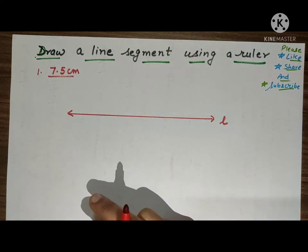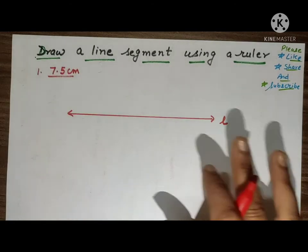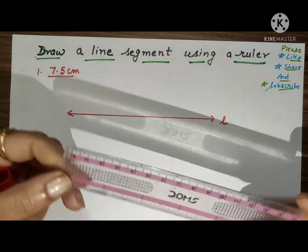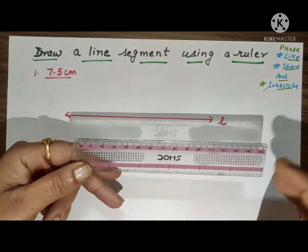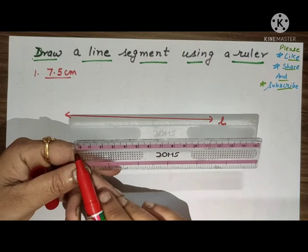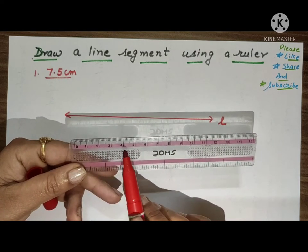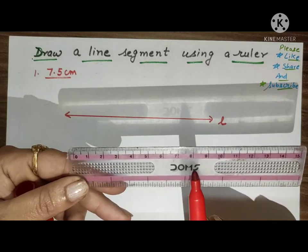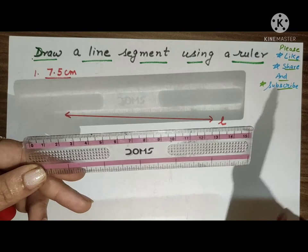So first of all, we have to take a line. This is the first line we have to draw without measuring. Then we take the scale. Here it is zero, then one, two, three, four, five, six, seven, eight, nine, ten, eleven, twelve, thirteen, fourteen, fifteen.